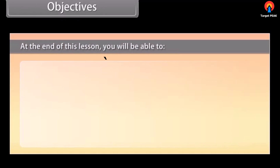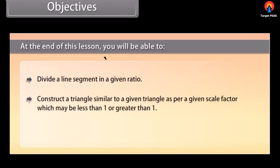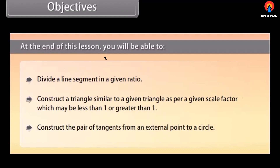At the end of this lesson you will be able to: divide a line segment in a given ratio; construct a triangle similar to a given triangle as per a given scale factor, which may be less than 1 or greater than 1; and construct a pair of tangents from an external point to a circle.